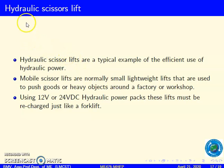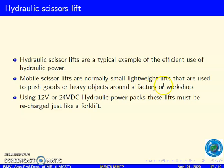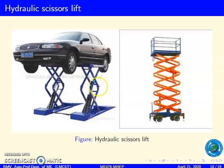Now we will see the hydraulic scissors lift. These are typical examples of efficient use of hydraulic power. Mobile scissors lifts are normally small lightweight lifts that are used to push goods or heavy objects around a factory or a workshop. This video shows a hydraulic scissors lift lifting a car.